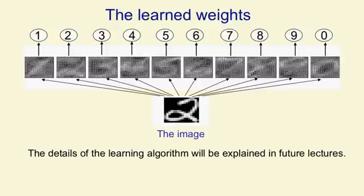I'll talk more in future lectures about the precise details of the learning algorithm. But what you can see is the weights now look like little templates for the shapes. If you look at the weights going into the one unit, for example, they look like a little template for identifying ones. They're not quite templates.